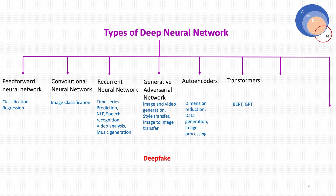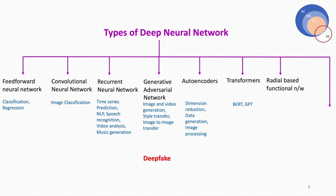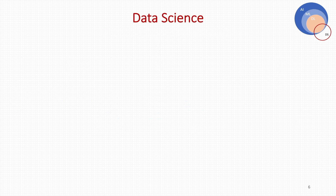The hottest topic right now is transformers. Transformers are the technology behind ChatGPT and are also used in the BERT architecture in NLP. Two other deep learning types are Radial Basis Function networks and Self-Organizing Maps.